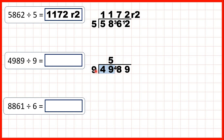To check: 5 times 9 is 45, 45 plus 4 is 49. So now we have 48 divided by 9. The closest number to 48 in the 9 times table that's still less than 48 is 45. 45 is 5 times 9, so we write 5 in our answer. But 5 times 9 is 45, and we need to count on or add 3 from 45 to get to 48, so 3 is our remainder, and we can write that in front of the next digit.